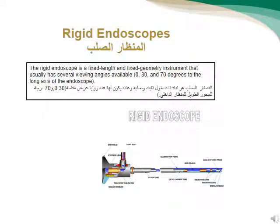Rigid endoscopy is a fixed geometry instrument that usually has several viewing angles available. المناظر الصلبة عبارة عن منظار ثابت الطول والزاوية، كما تتوفر أكثر من زاوية للمشاهدة.